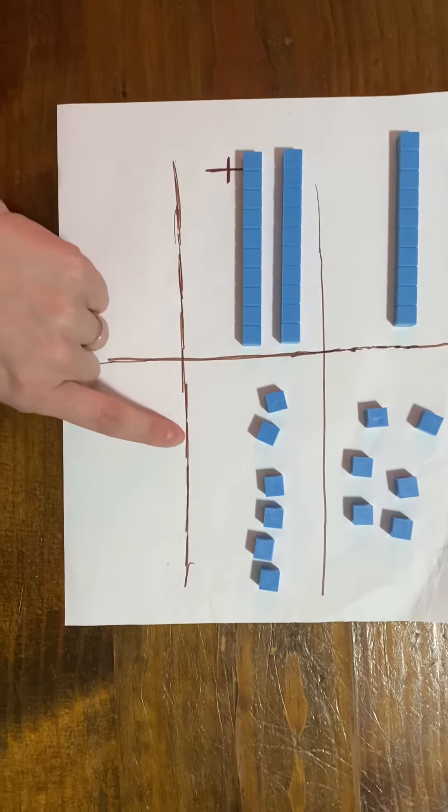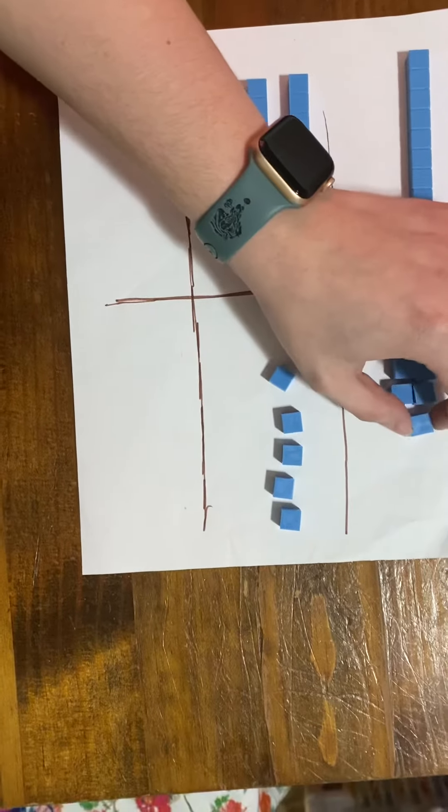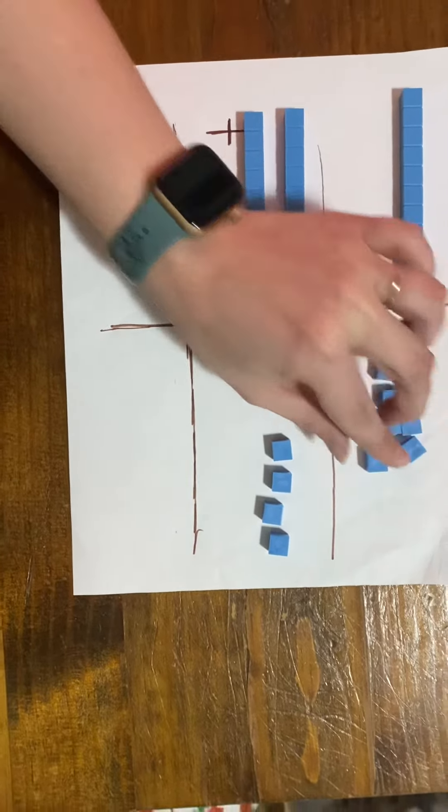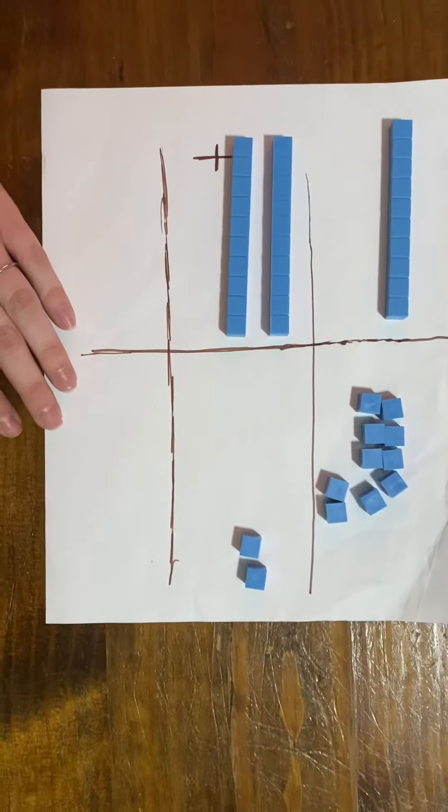So we start in the ones place and we have 6 up here. We count 7, 8, 9, 10. So that's a group of 10.